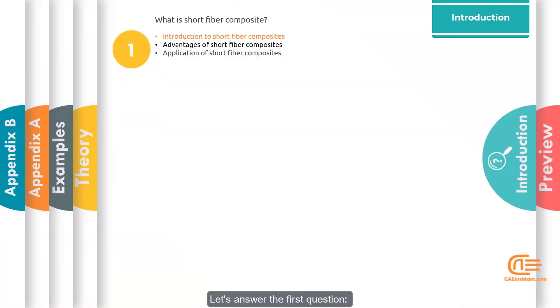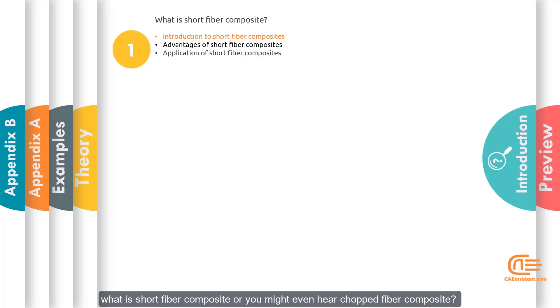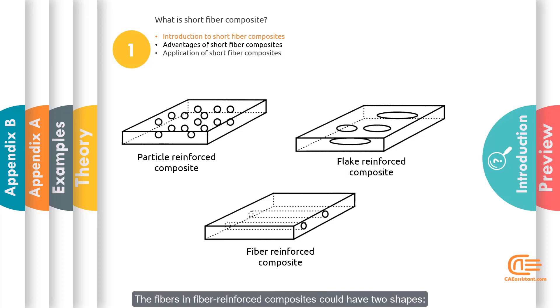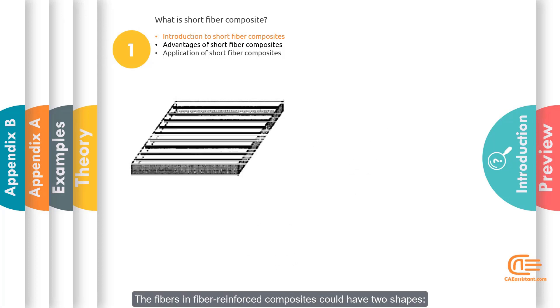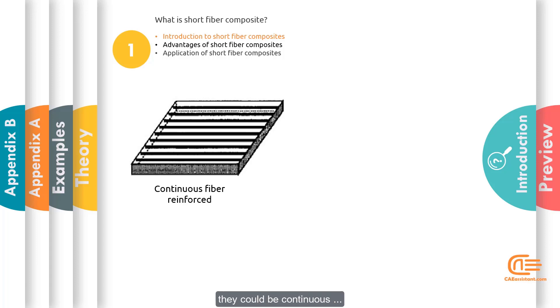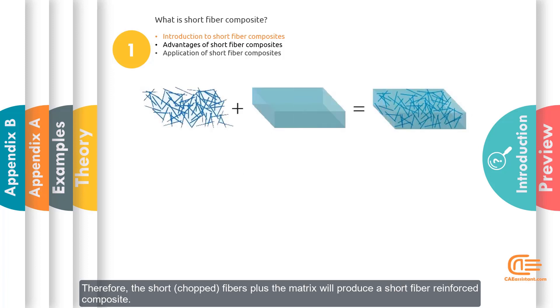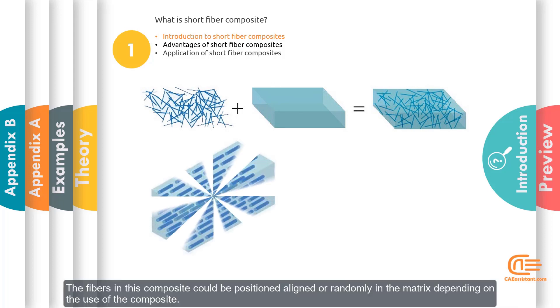Let's answer the first question: What is short fiber composite, or you might even hear chopped fiber composite? As you know, composites are made of two main parts: reinforcement and matrix. The reinforcement part could come in different shapes—particle, flake, and fiber. The fibers in fiber reinforced composites could be continuous or discontinuous. You can call the discontinuous fiber reinforced composite the short fiber reinforced composite. The fibers in this composite could be positioned aligned or randomly in the matrix, depending on the use of the composite.